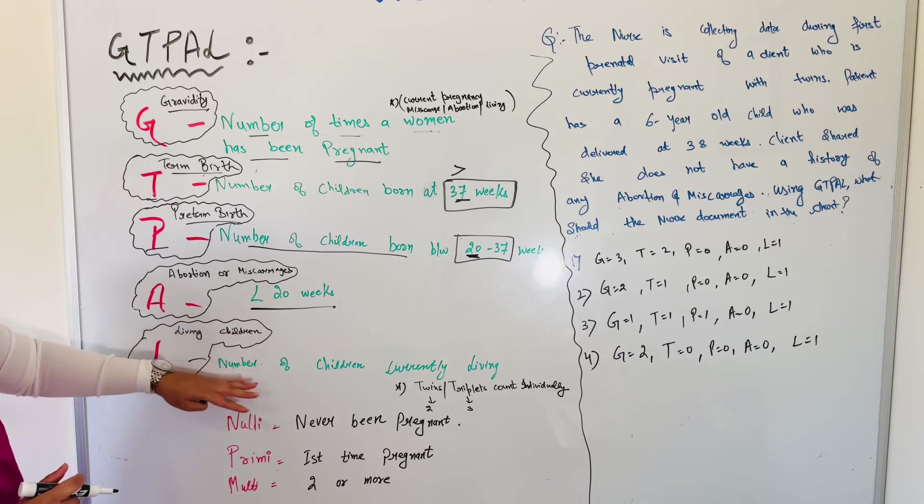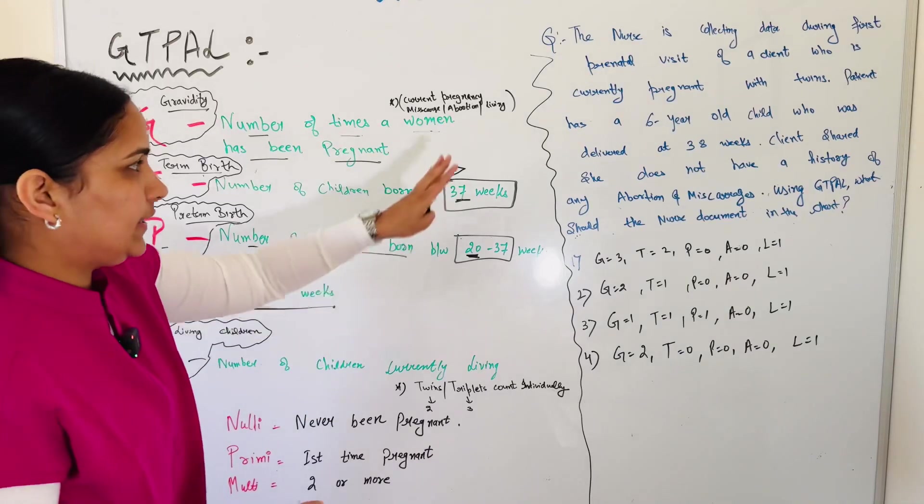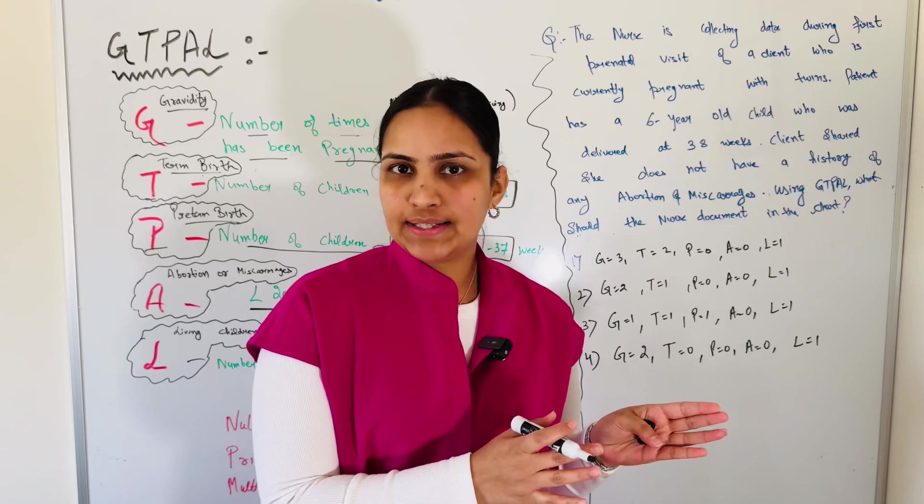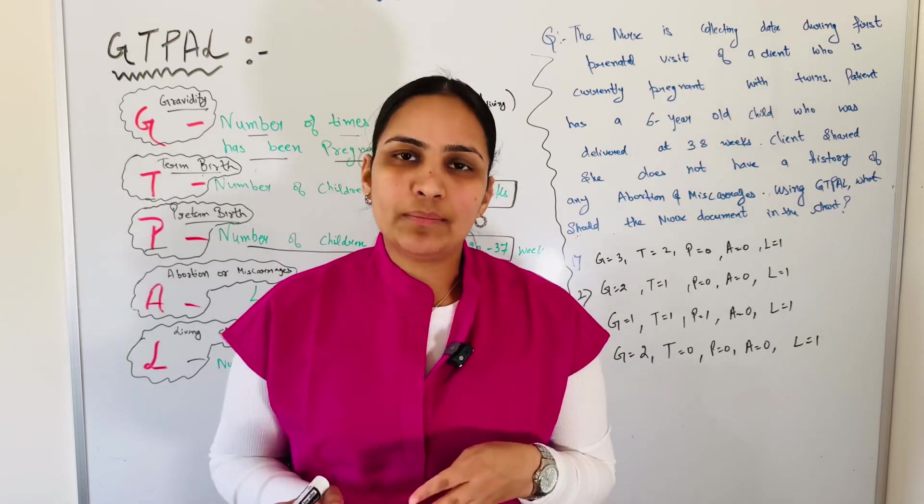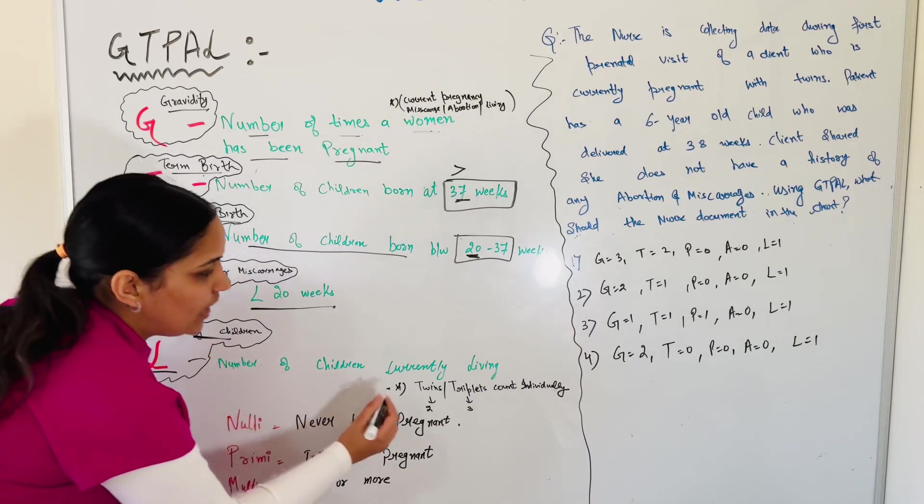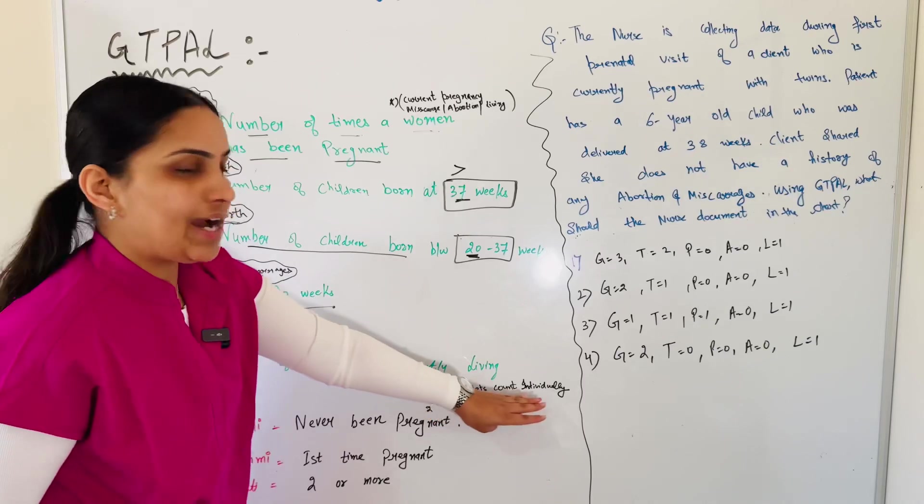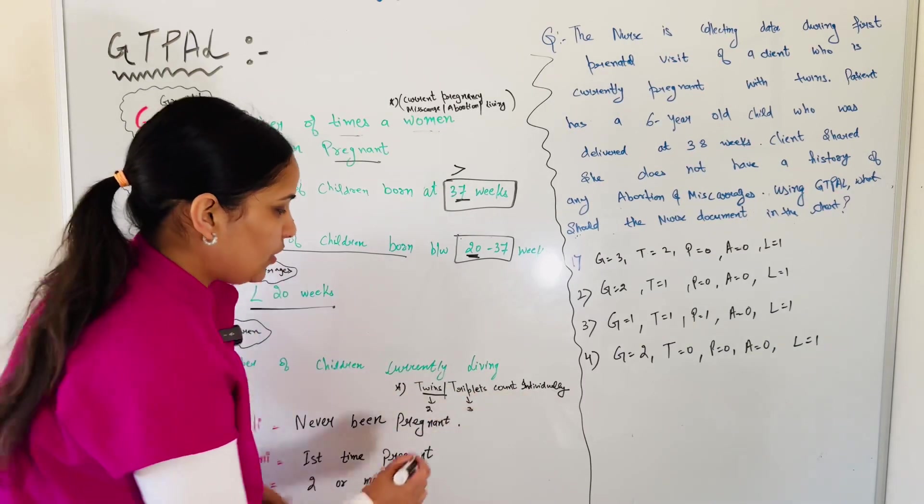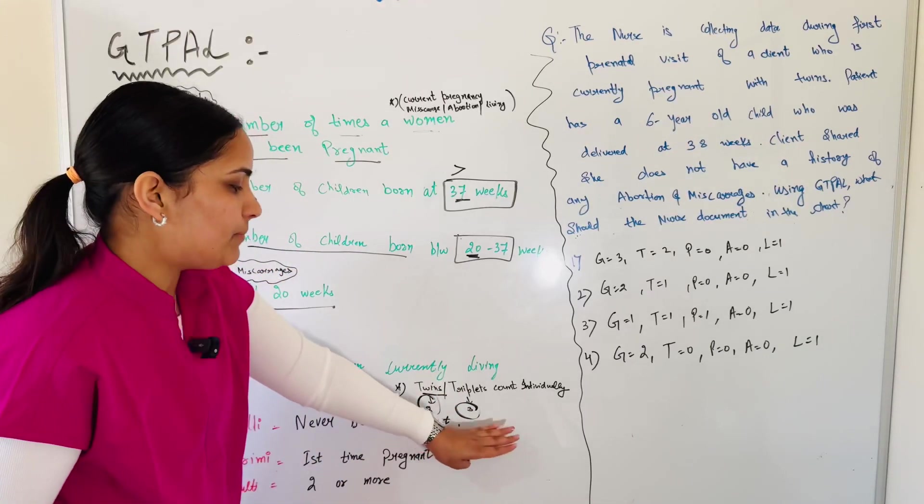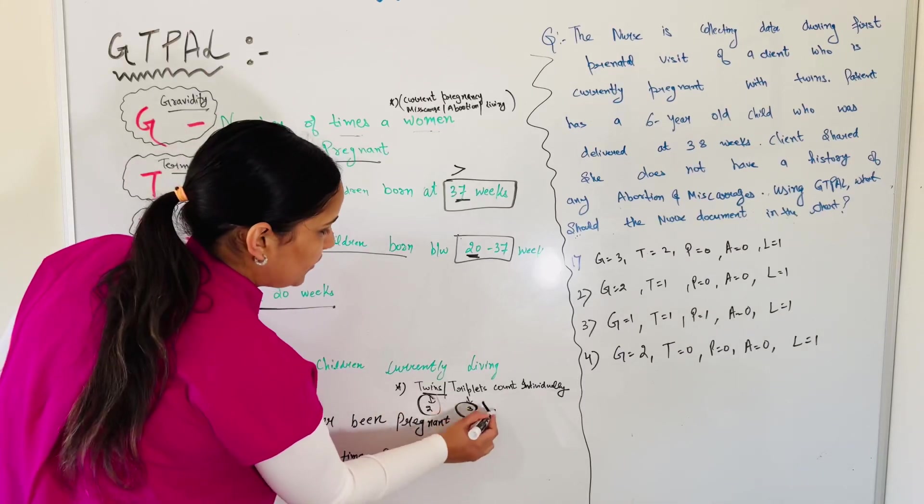L is living children, number of children currently living. So the key word in these terms: some students are confused whether we count the number of pregnancies or the number of children. L is living. This is the only one where we will count twins, triplets count as individuals. So twins means 2 babies, triplets 3 babies born together.